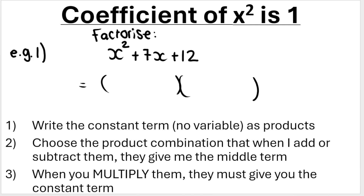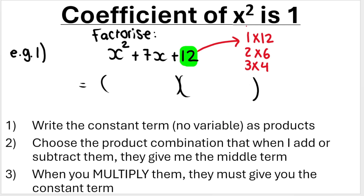Here are the steps or the method. The first step says: write the constant term — the term that has no variable; in this case it's 12 — as a product. So what multiplied by what gives me 12? One times 12 gives me 12. Two times six gives me 12. And three times four gives me 12. There are no other combinations that when I multiply them together give me 12. So those are the three. You can do them in your head if you want; you don't always have to write them out. That is step one done.